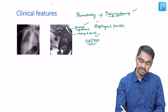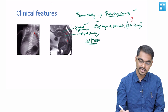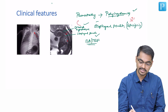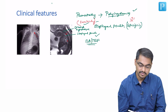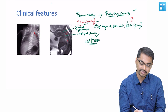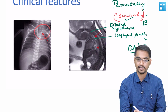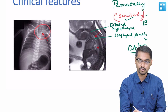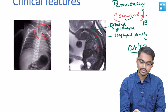Of these features, the esophageal pouch has higher specificity, whereas the dilated hypopharynx has higher sensitivity. After delivery, if the pediatrician tries to pass a nasogastric tube, there will be coiling of the NG tube within the hypopharynx. Failure to pass an NG tube into the stomach is also one of the features of tracheoesophageal fistula or esophageal atresia.